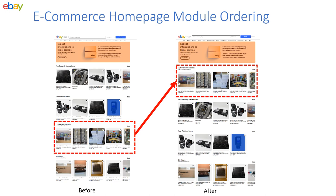Yet the order of recommendation modules is still commonly manually determined by domain experts, resulting in a fixed module order for all users. We formally addressed this optimization challenge and defined the homepage module ordering problem as deciding the order in which various recommendation modules should be displayed to the user on their next visit to the homepage.